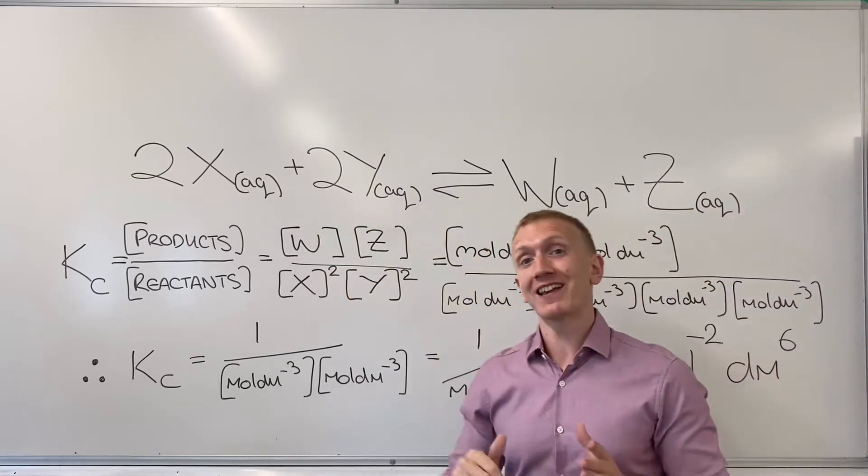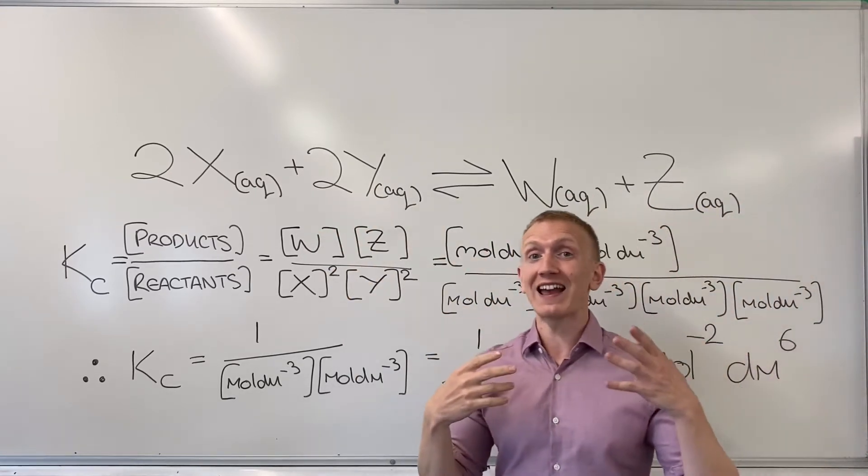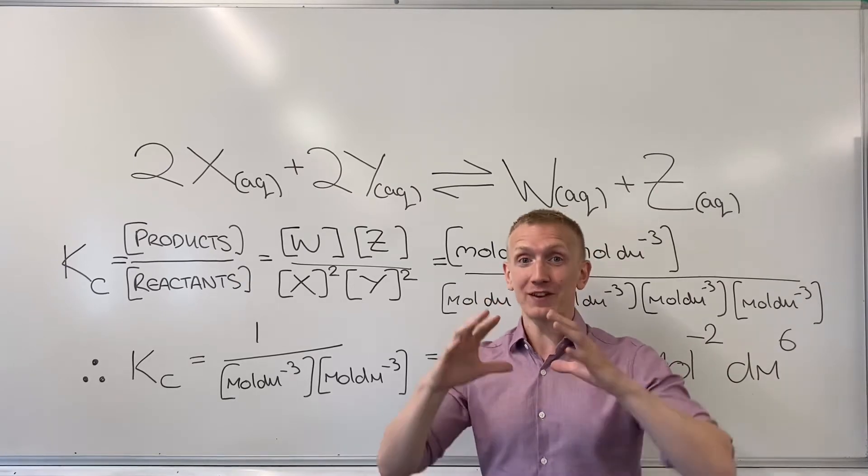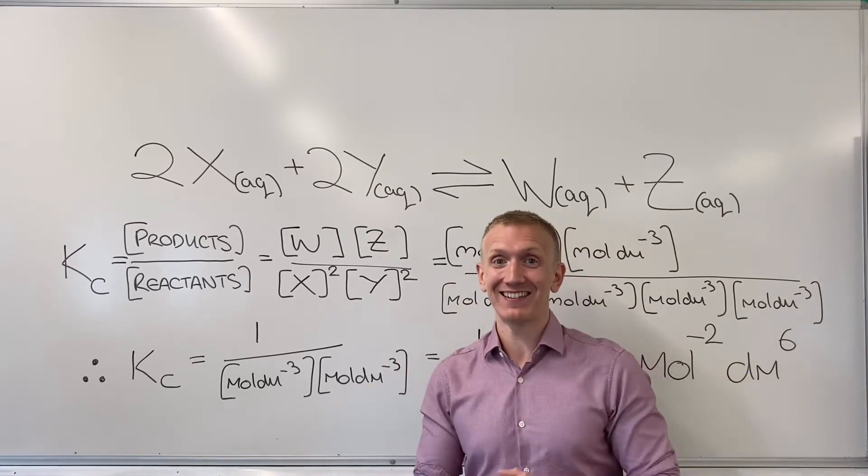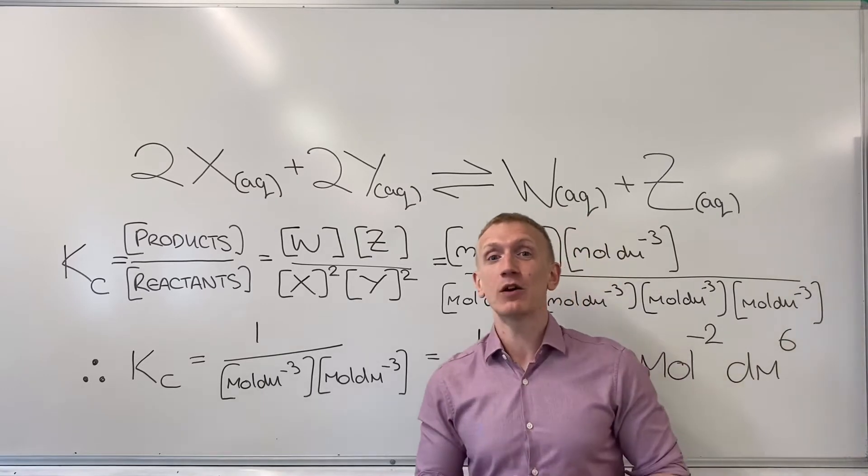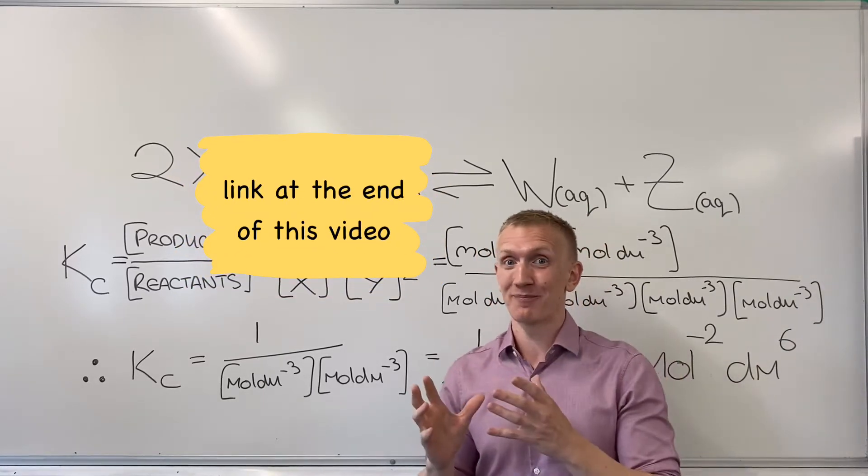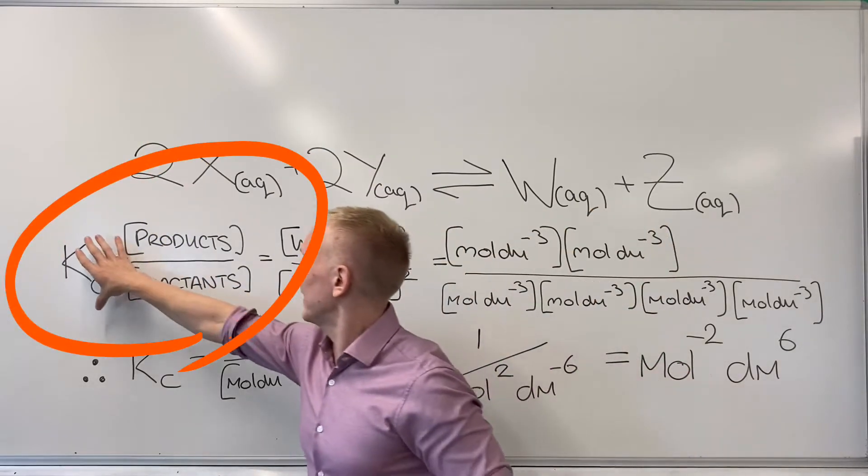You can see here that everything's got the same state symbol so I would call this a homogeneous equilibrium. As a result everything is going to make it into the Kc expression. You need to see our video on heterogeneous equilibrium if you want to know how that can be a little bit different.